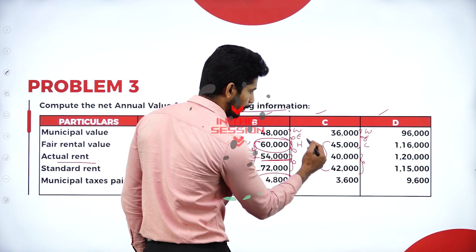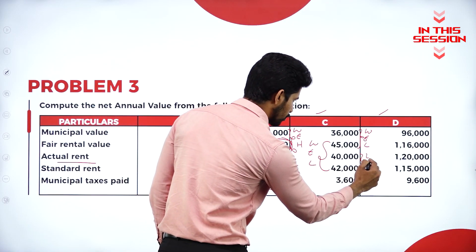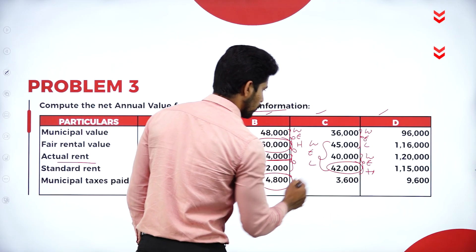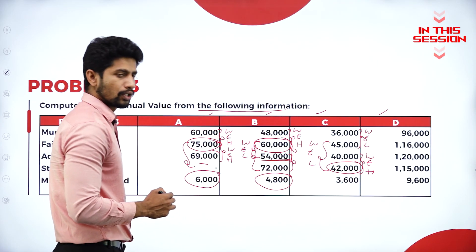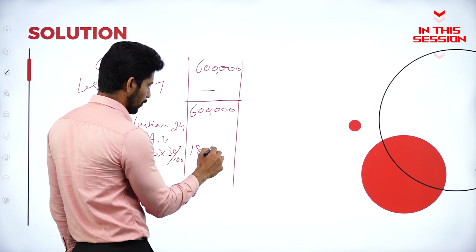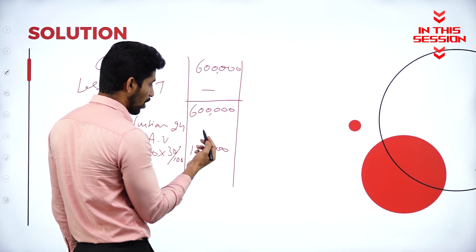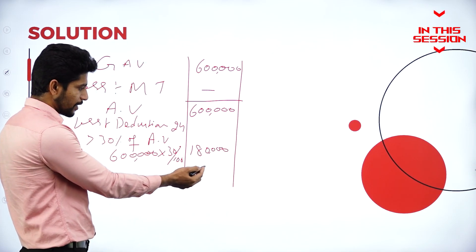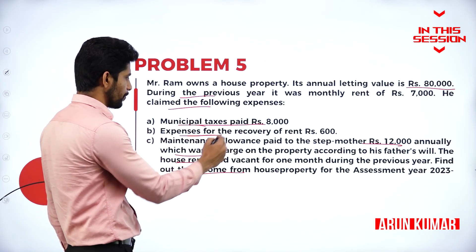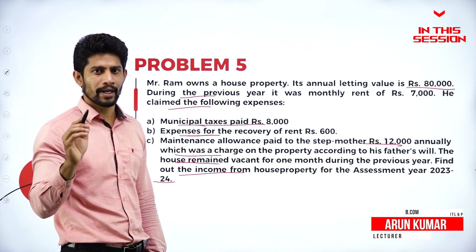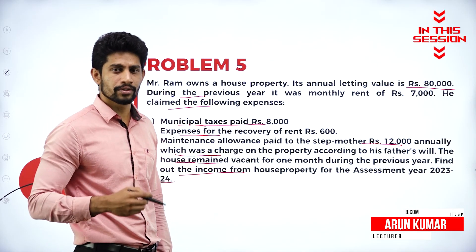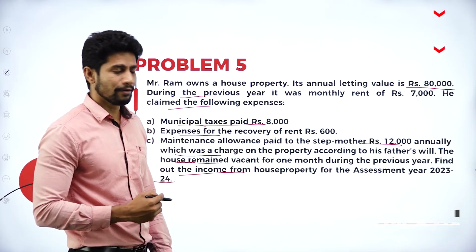Compare with actual rent of 40, whichever is high — the highest amount is 42,000. 6 lakh into 30% is 1 lakh 80,000. So interest on loan, if it is given, we deduct here — it is not given. They have given too many pieces of information, but just to follow the format, don't do anything extra adjustments that are not in the format.